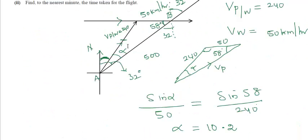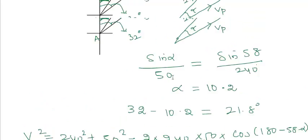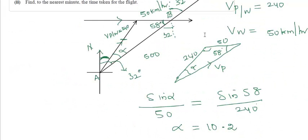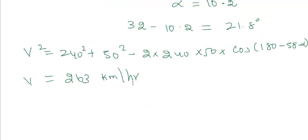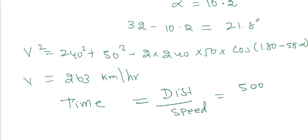Now the distance between A and B is 500, given in the question. And we have the speed also. So the time taken can be easily calculated. Time taken from A to B is distance upon speed: 500 divided by 263, which gives 114 minutes, which is 1 hour and 54 minutes.